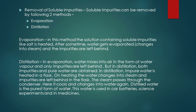Now, removal of soluble impurities. Soluble impurities can be removed by two methods: evaporation and distillation. In evaporation, the solution containing soluble impurities like salt or sugar is heated. After some time, the water evaporates — it changes into steam — and the impurities are left behind. The impurities here are sugar and salt. By this method only, salt is made near the sea and oceans. This is the evaporation process.